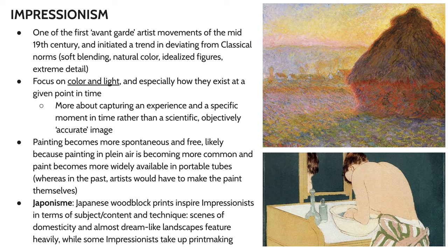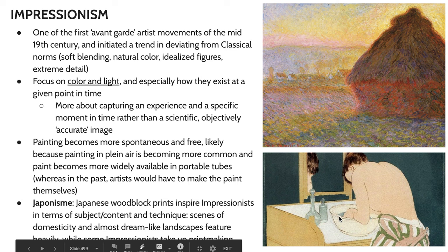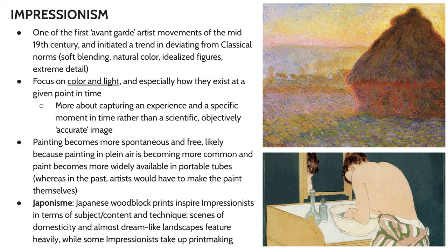Lots of artists like Mary Cassatt started creating printed works — in her case, etching and aquatints rather than woodblocks. Some artists also created their own versions of woodblock prints. Van Gogh, for example, did several paintings where he attempted to recreate scenes depicted in ukiyo-e Japanese prints.